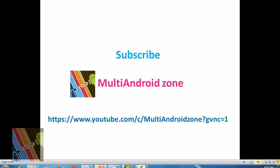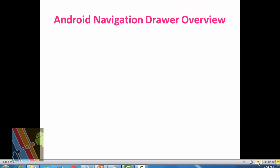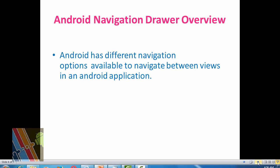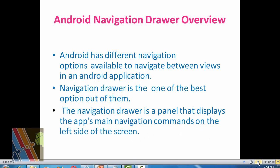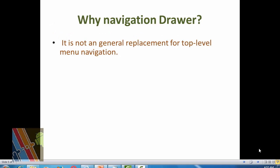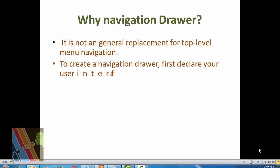Now look at the navigation drawer overview. Navigation drawer is an overlay panel that replaced the legacy application menu. Android has many navigation options available to navigate between views in Android applications. Navigation drawer is one of the best of them. It is a panel that displays the app's main navigation options on the left side of the screen. Most Google apps have a navigation drawer, and it can be customized according to the application requirement and utility.